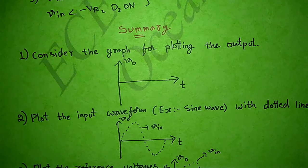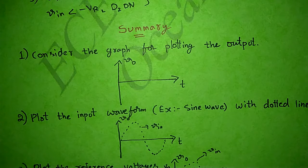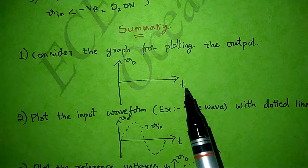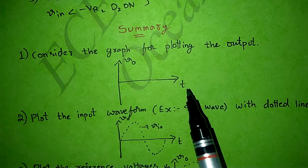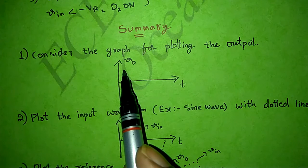The first point is we have to consider the graph for plotting the output. I took the x-axis and y-axis — on the x-axis I represented time, and on the y-axis I represented output voltage.